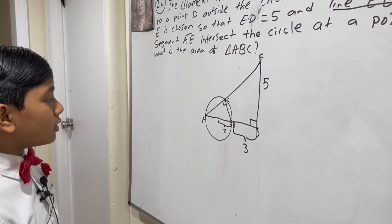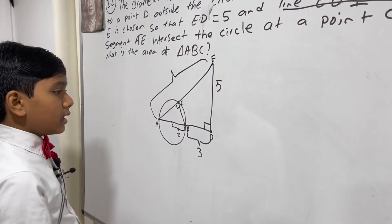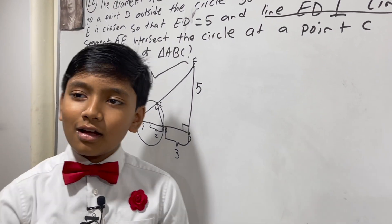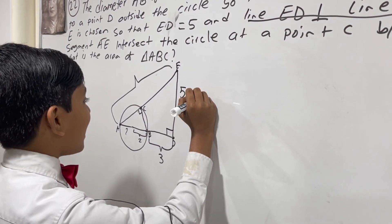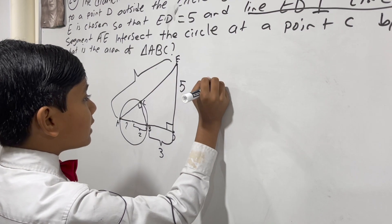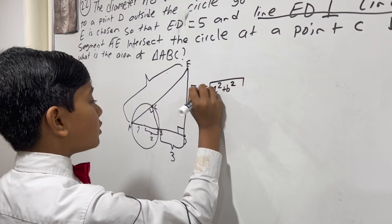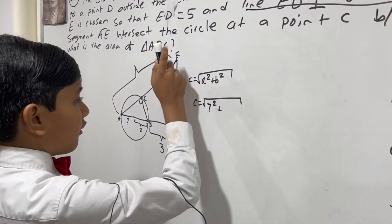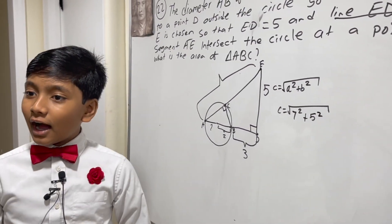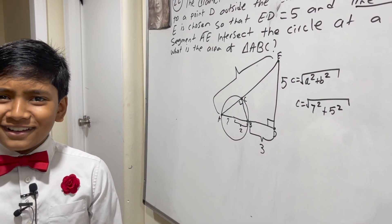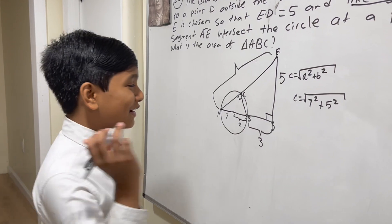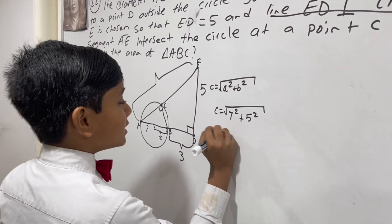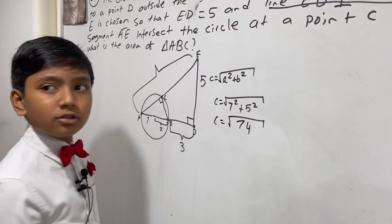So first of all, we're going to have to find AE, and we're going to use the Pythagorean theorem for that. A squared plus B squared — the square root of A squared plus B squared — which gives us: A is going to be 7, B is going to be 5, so C is going to be equal to the square root of 74.